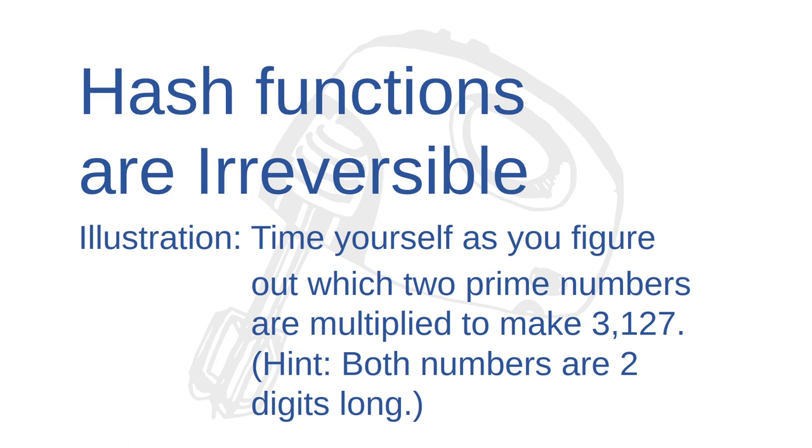Okay, got that? Pause the video now and try to calculate which two prime numbers multiplied together equal 3,127. If you get stuck, just unpause the video and move on. Don't worry about it. Ready? Good. Pause the video now.